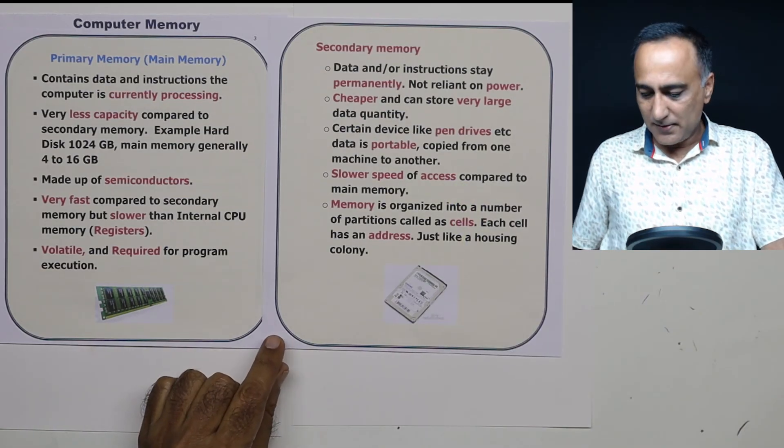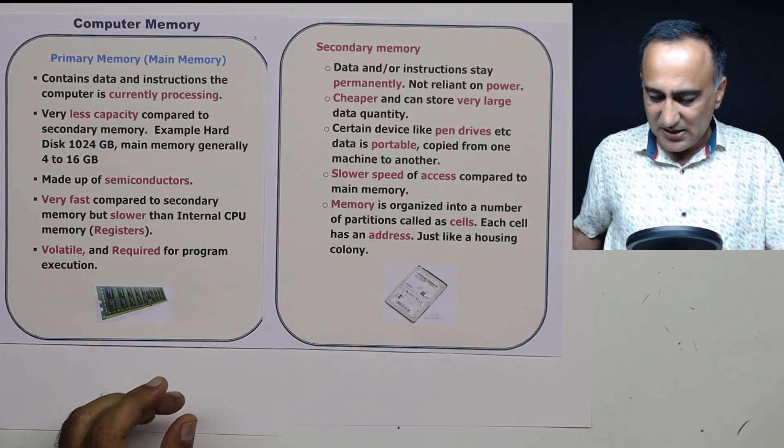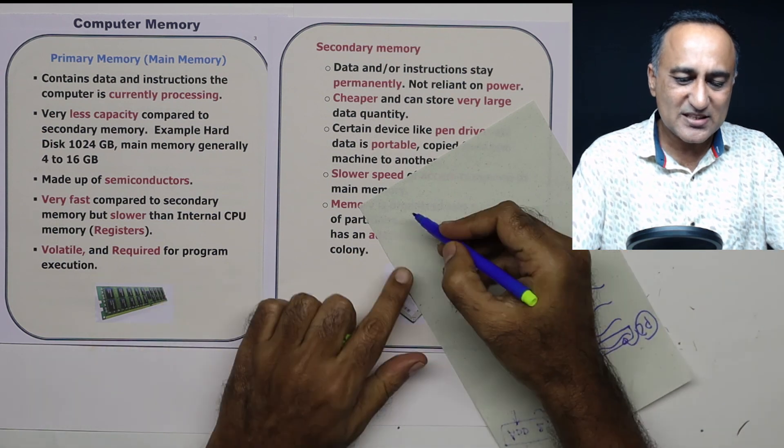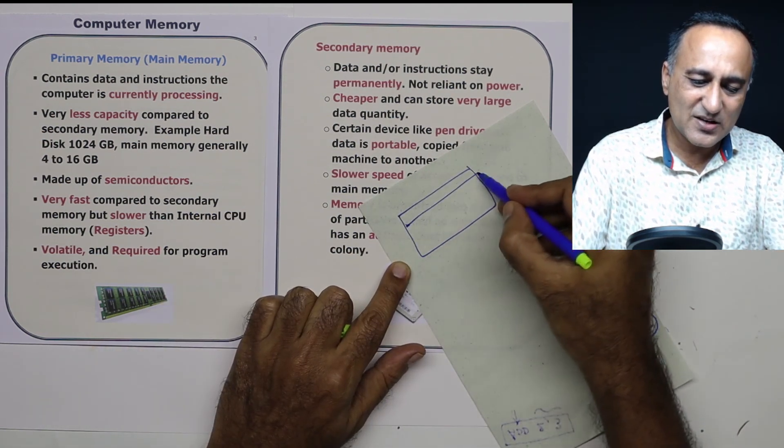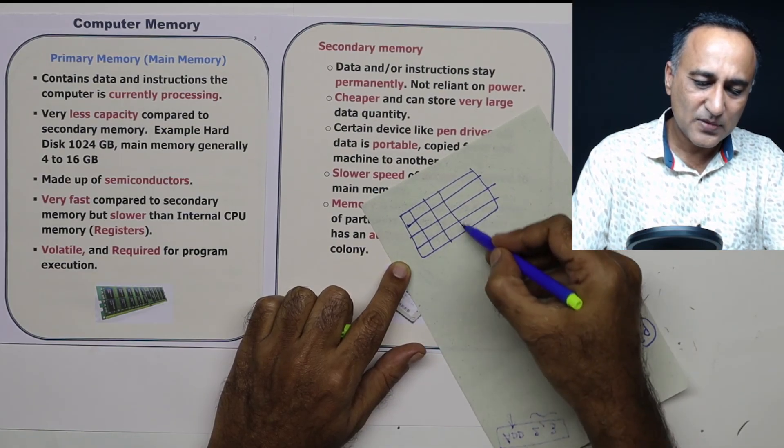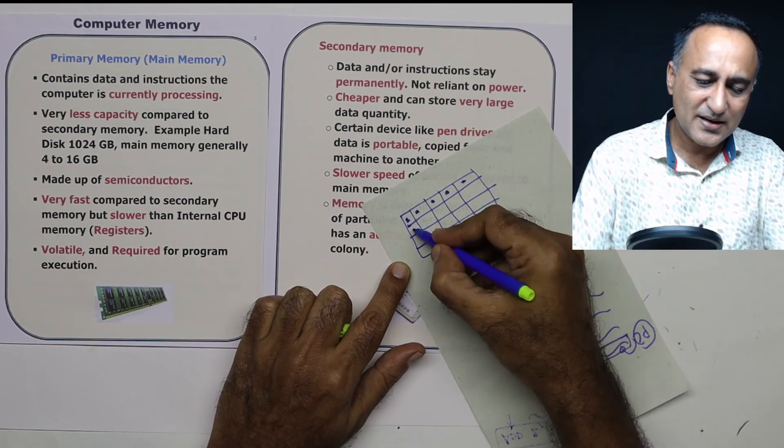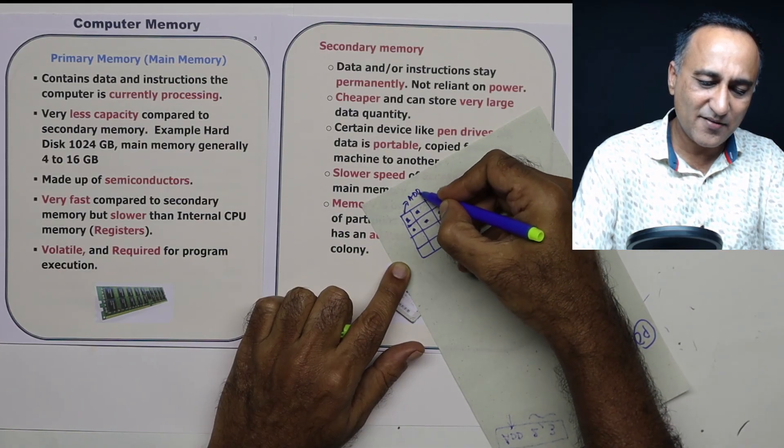Most important part, just as we have house addresses, your memory is also divided into blocks. So whether it's the main memory or second memory, you can think of it like this. It is divided into number of blocks like this. So each of this fellow holds some data and each of this fellow has an address.